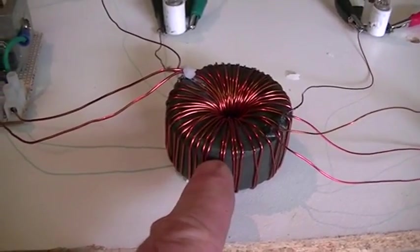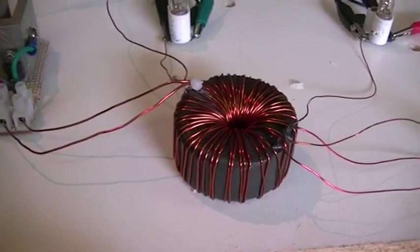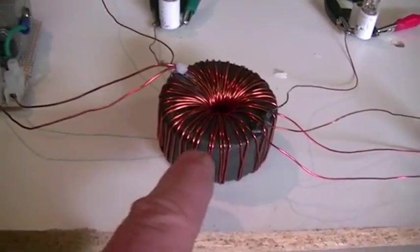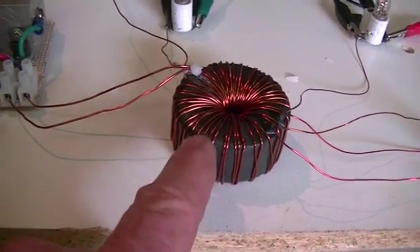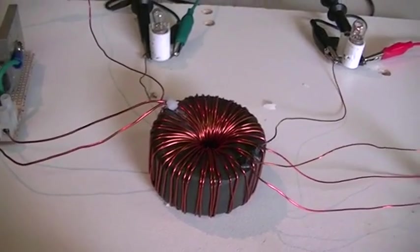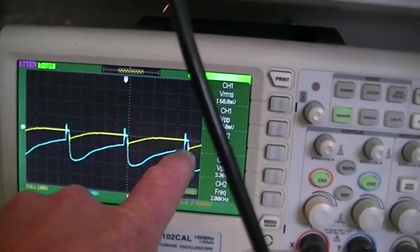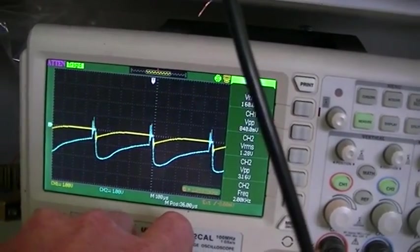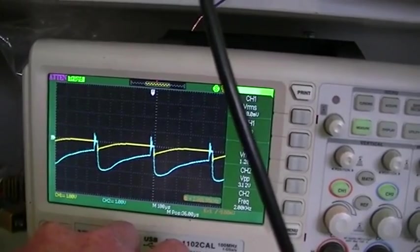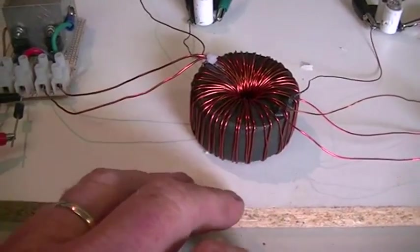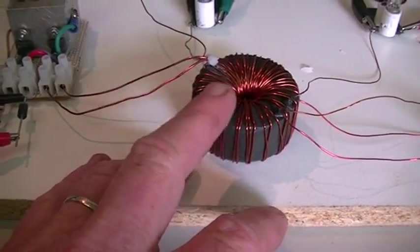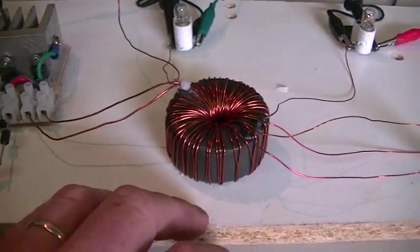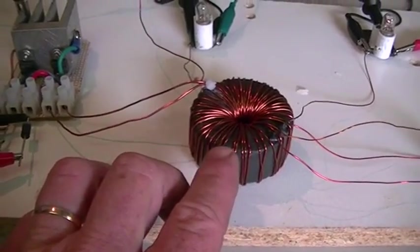The magnetic field definitely continues on for a far, far greater period of time at the center of our toroid than what it does around the outside. And like the scope is showing us, that field is still present and has not completely collapsed on the inside before our next on time starts. So this setup here is far, far more efficient than a standard toroid transformer. Having the windings in the center of the core is a much better option.